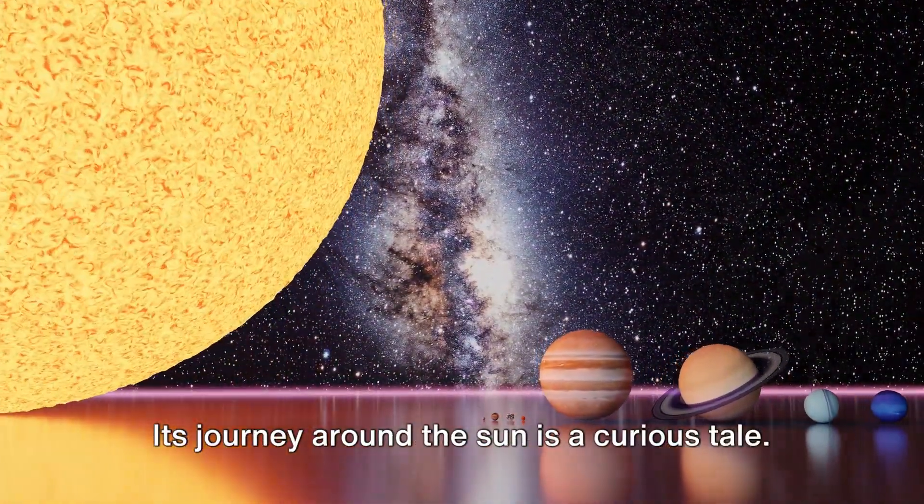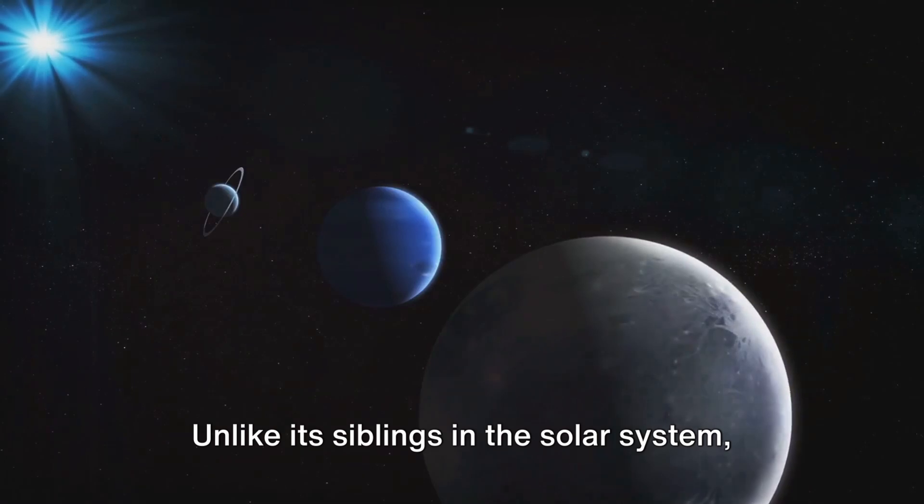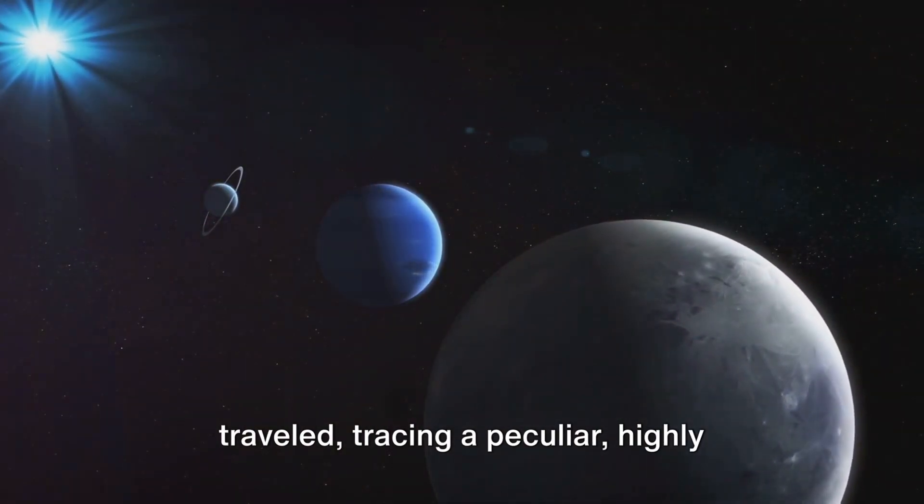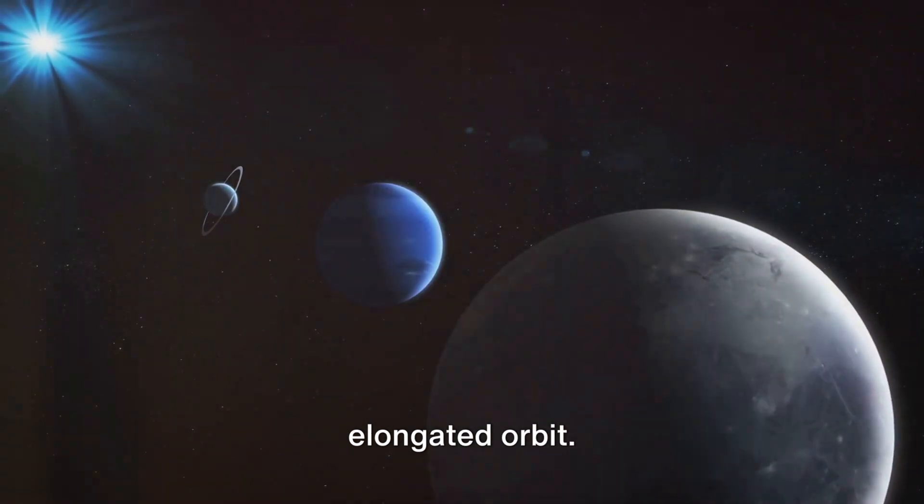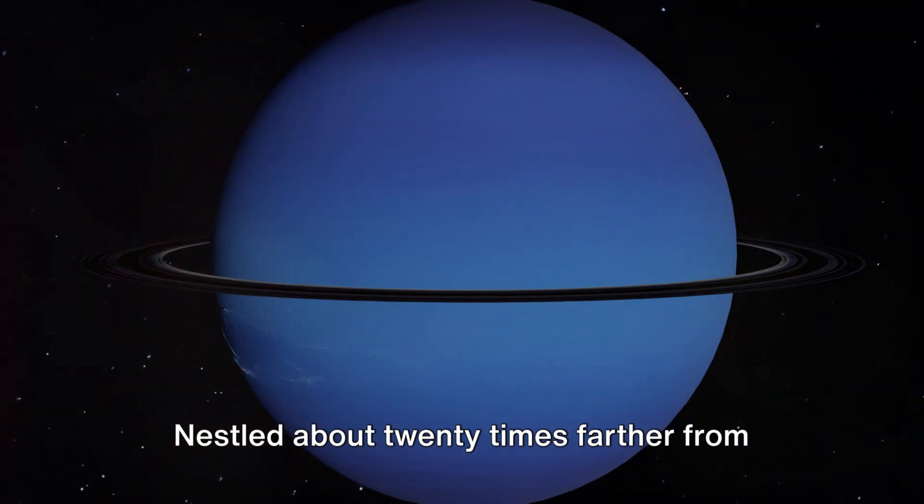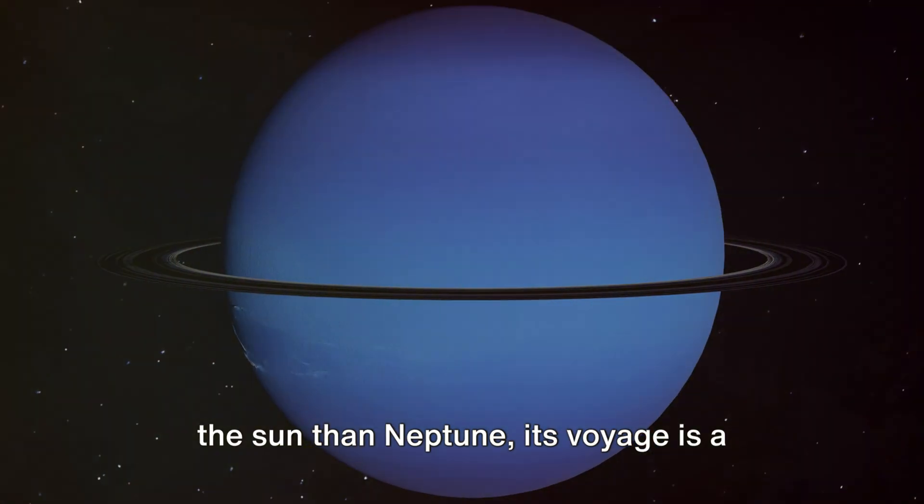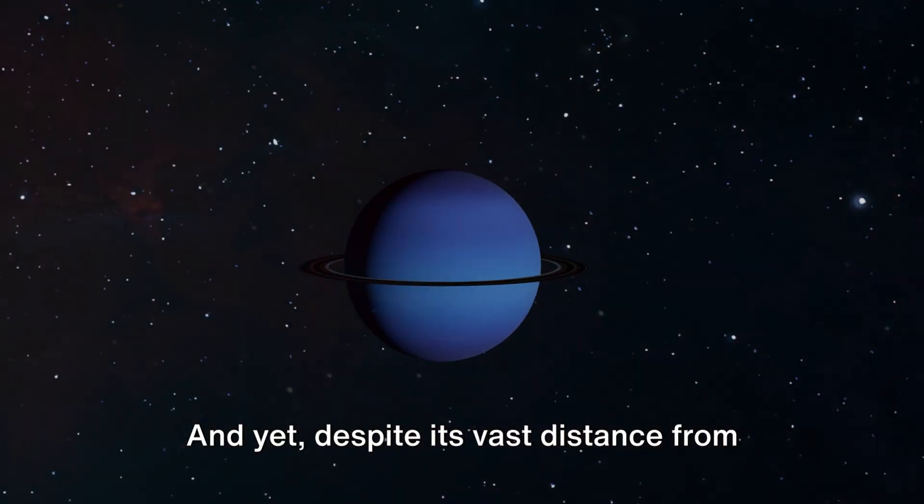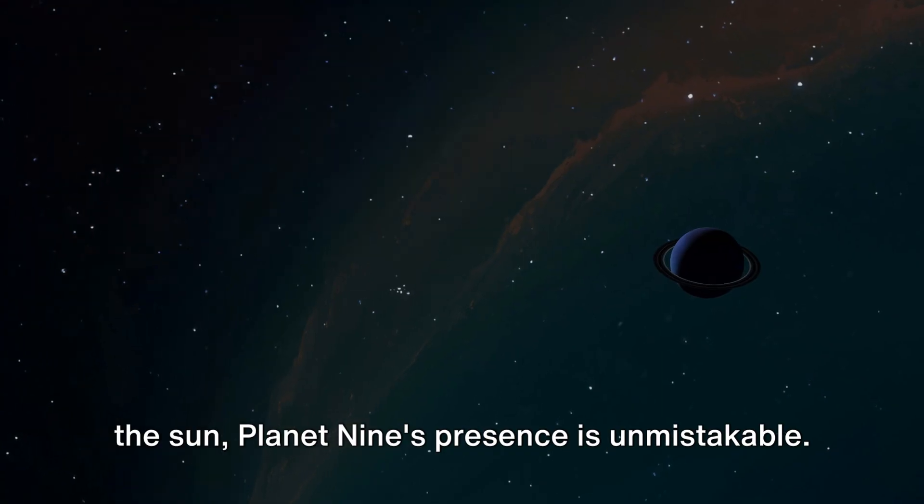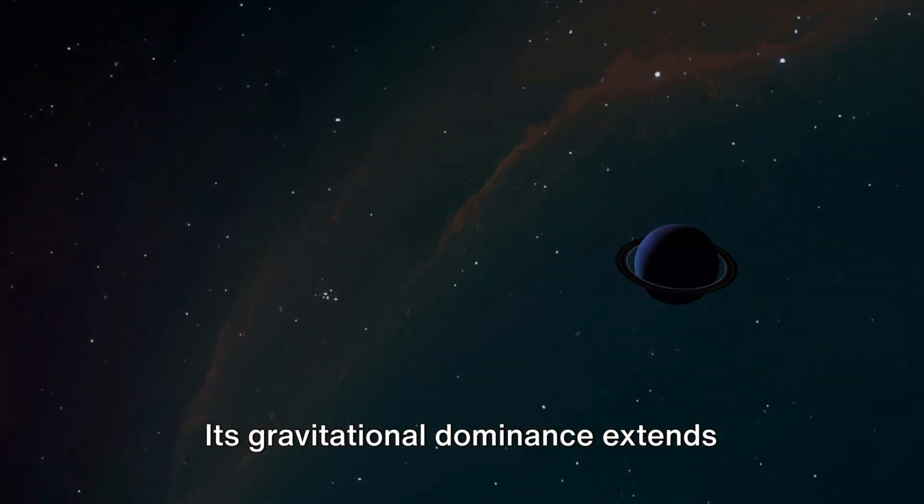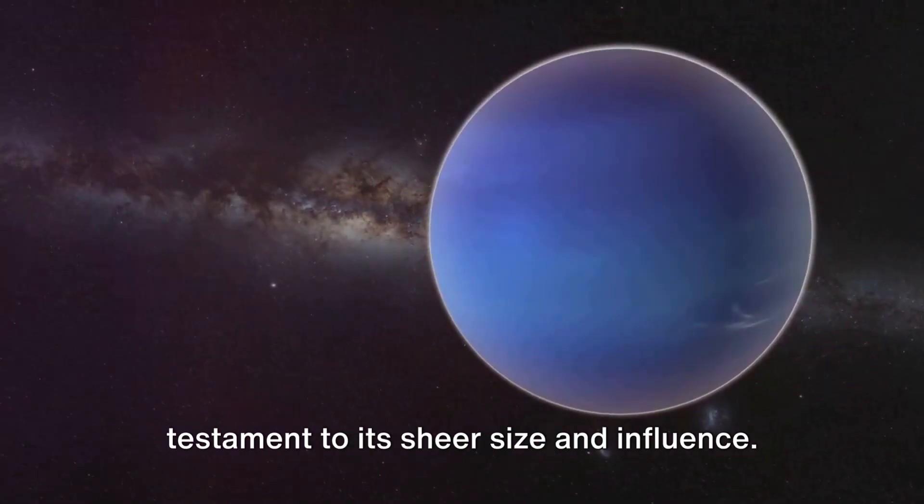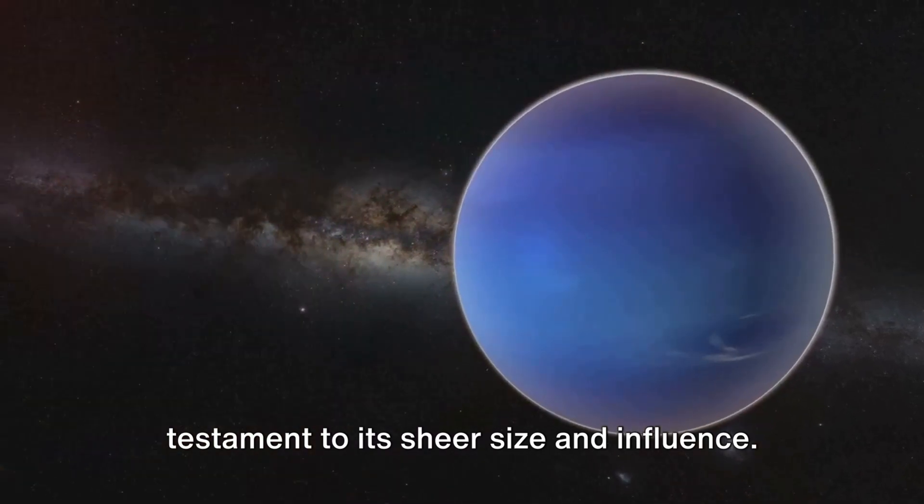Its journey around the sun is a curious tale. Unlike its siblings in the solar system, Planet Nine prefers the road less traveled, tracing a peculiar, highly elongated orbit. Nestled about twenty times farther from the sun than Neptune, its voyage is a spectacle of cosmic proportions. And yet, despite its vast distance from the sun, Planet Nine's presence is unmistakable. Its gravitational dominance extends beyond any of the known planets, a testament to its sheer size and influence.